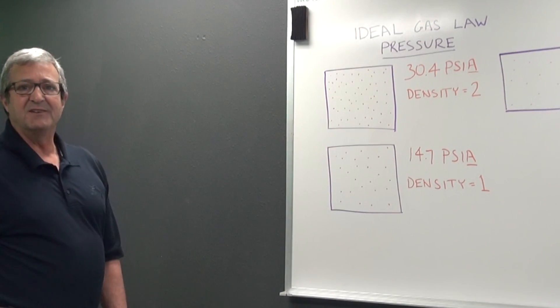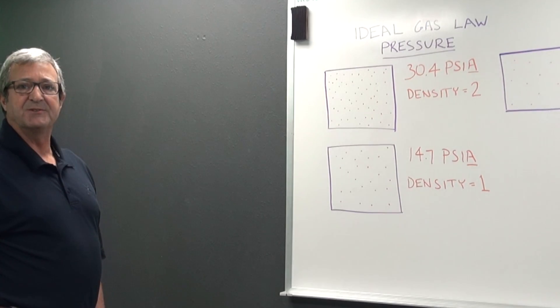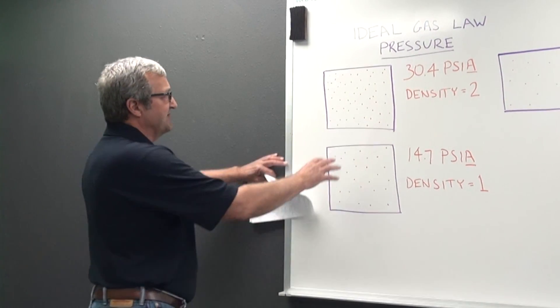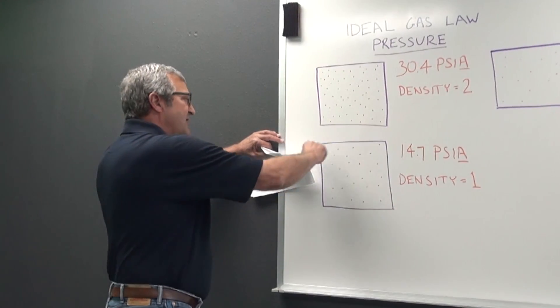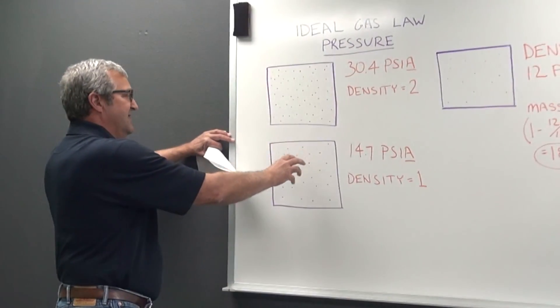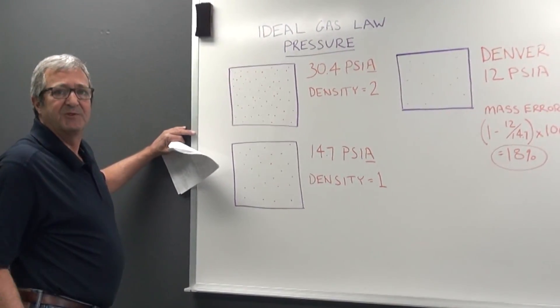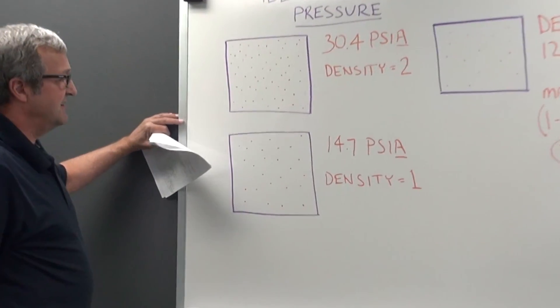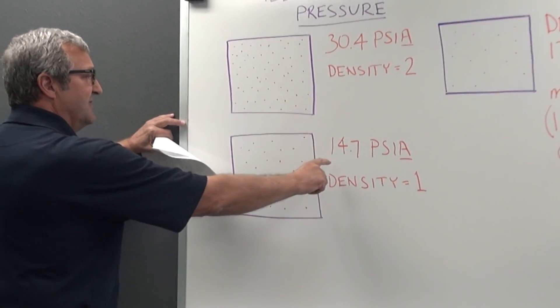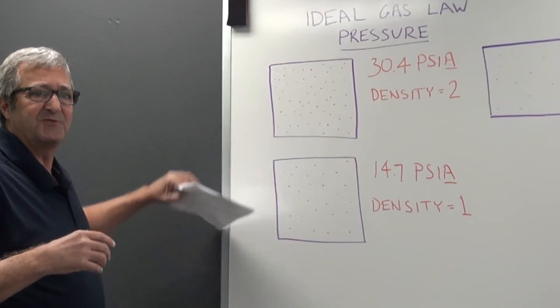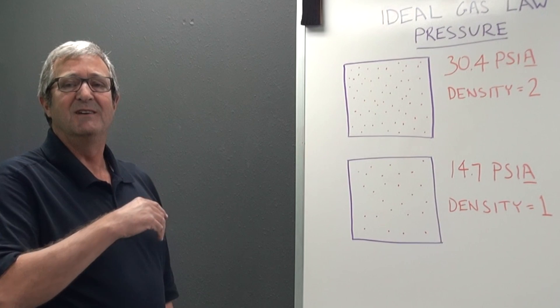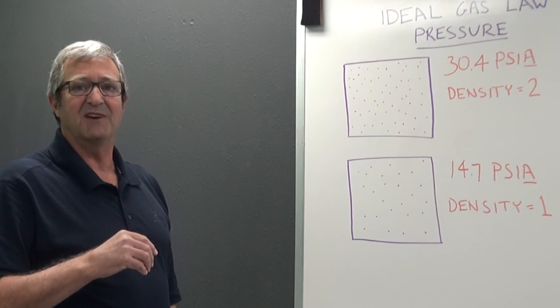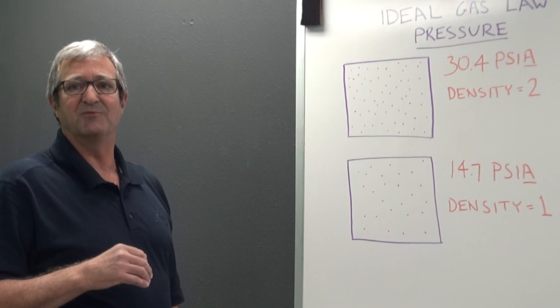So talking a little bit about how the ideal gas law applies to pressure. We have here a couple of examples, and what we're trying to show schematically is that for a given volume of space there's a certain number of molecules within that volume of space. What's really important when you're dealing in the ideal gas law is that the measurements that you use to do your calculations have to be what we call absolute measurements.